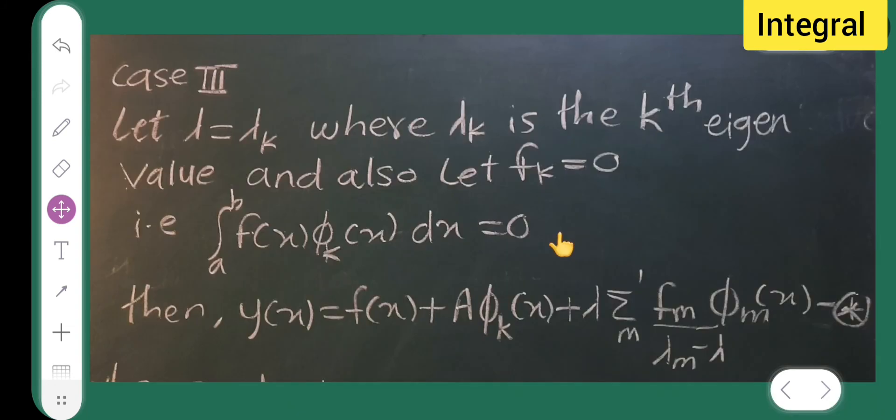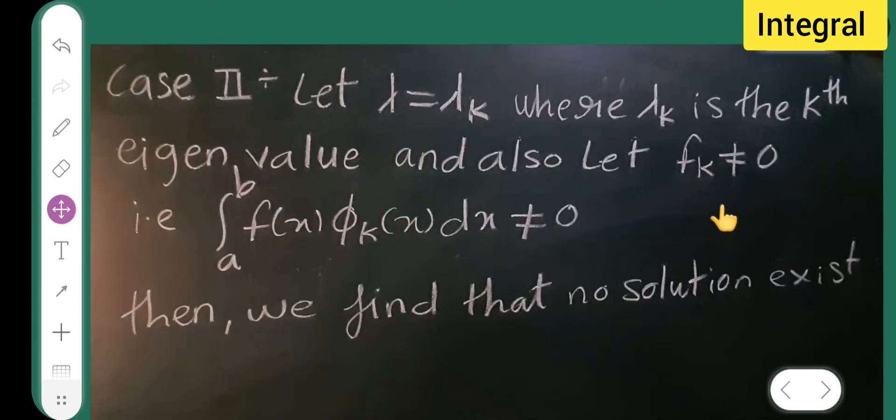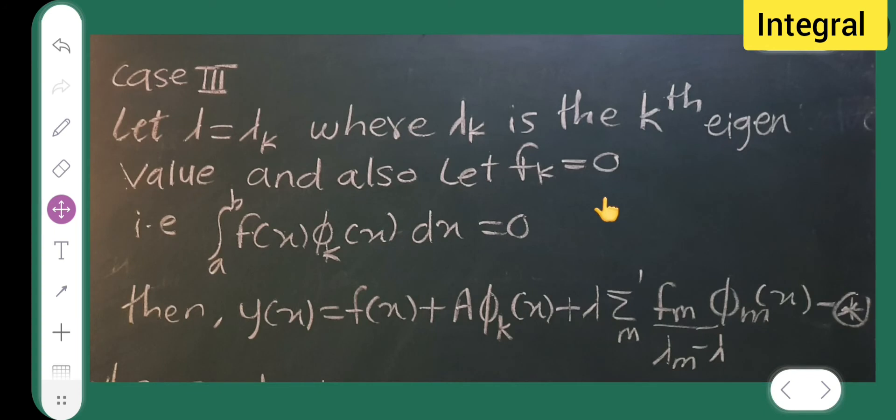And the third case is, let lambda equal lambda k. Lambda k is the kth eigenvalue and also let fk equal 0. In case 2, fk was not equal to 0. Here, in the third case, fk is equal to 0. That is, integral from a to b, f of x phi k of x dx is equal to 0.